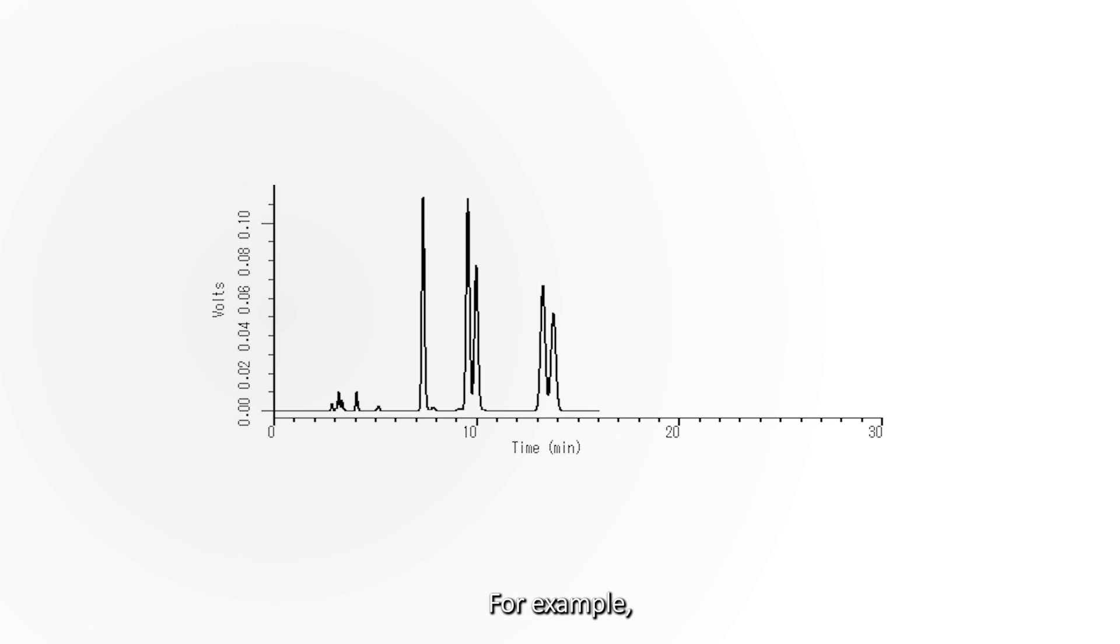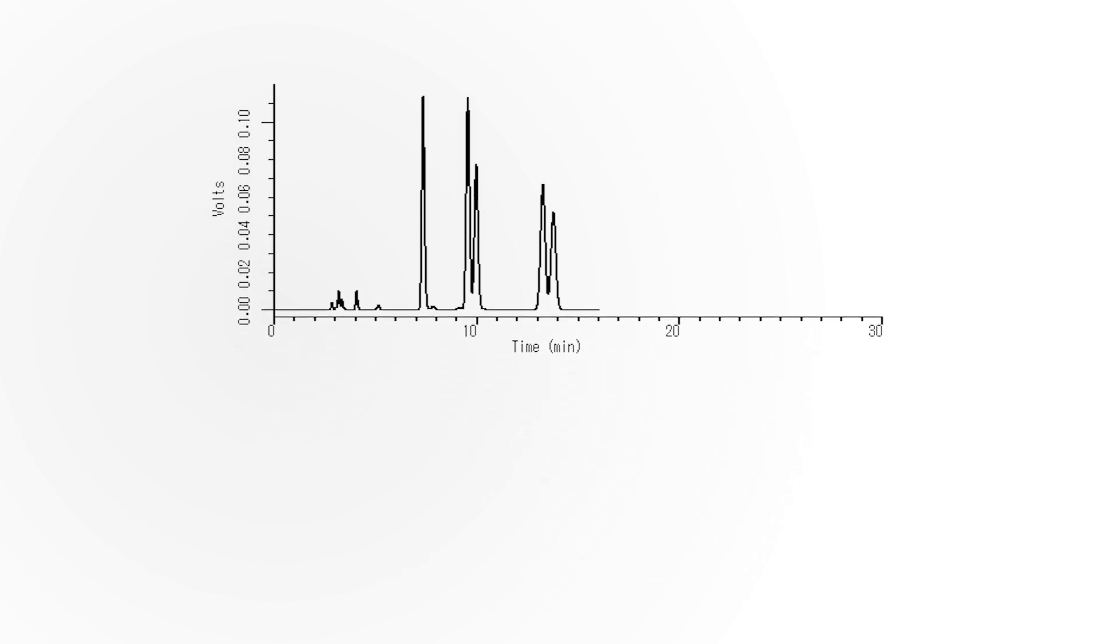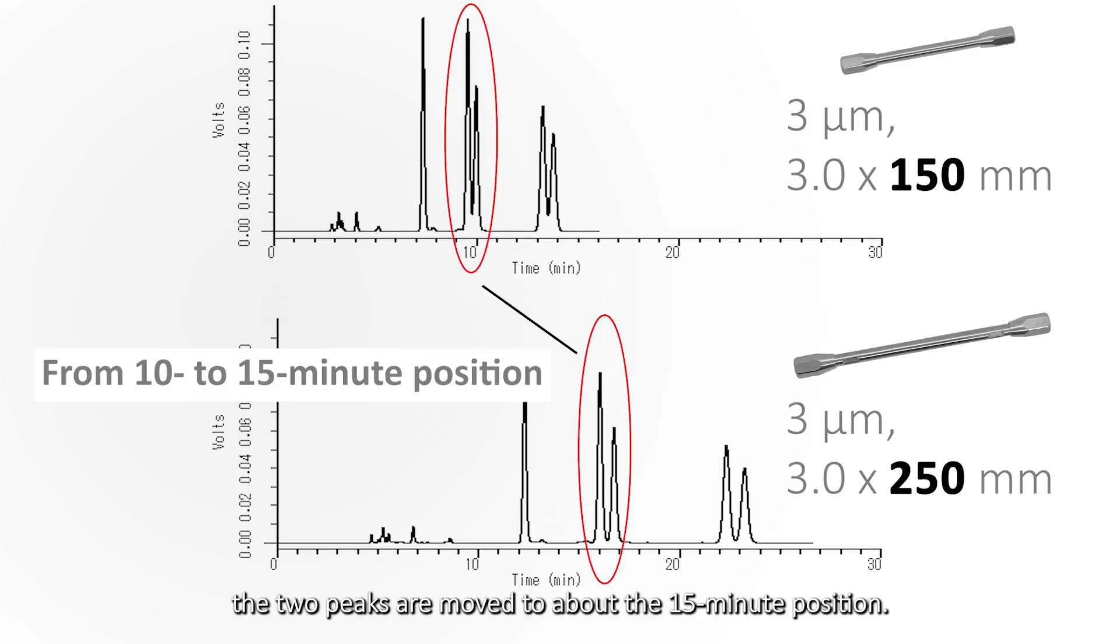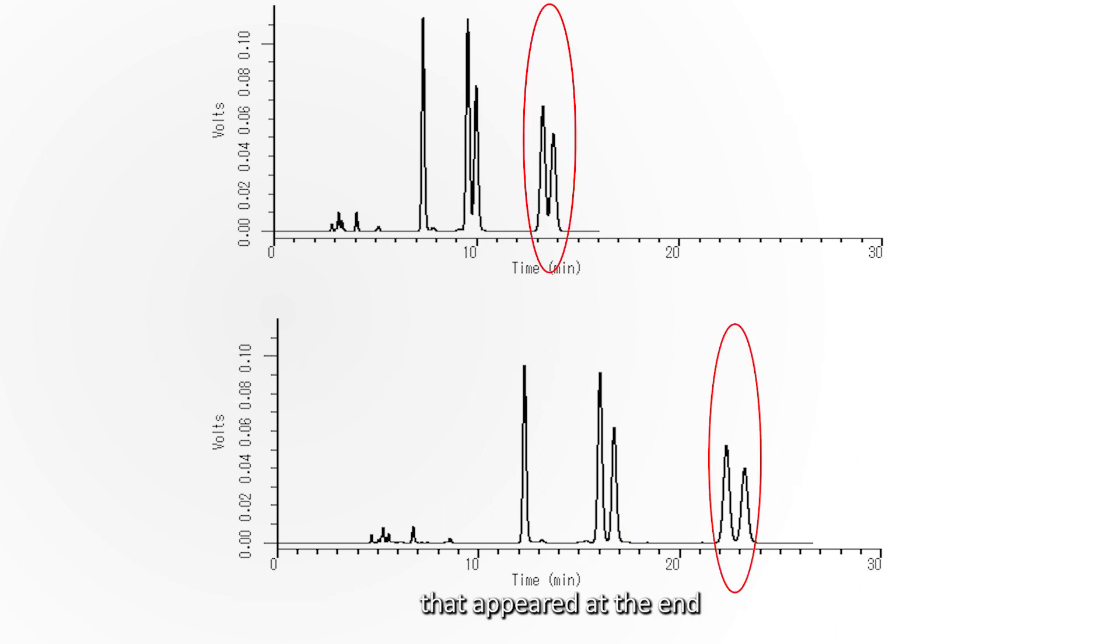For example, this chromatogram has two peaks at around the 10-minute position. As the length of column is increased, the two peaks are moved to about the 15-minute position. You can see that another peak that appeared at the end is offset by about 10 minutes.